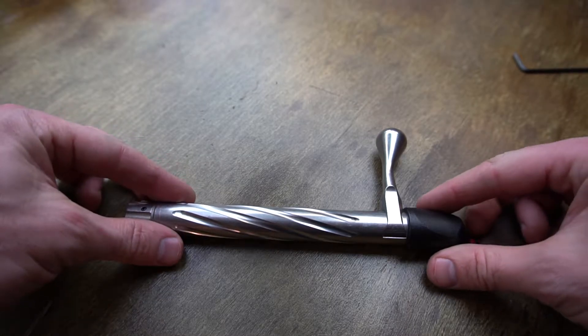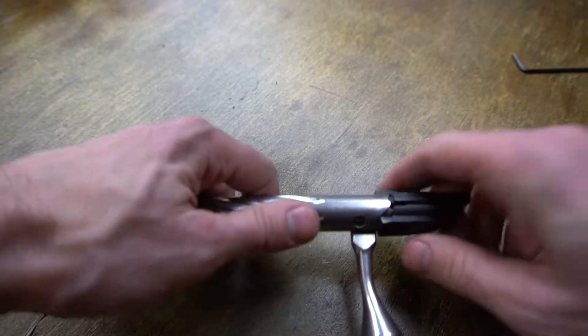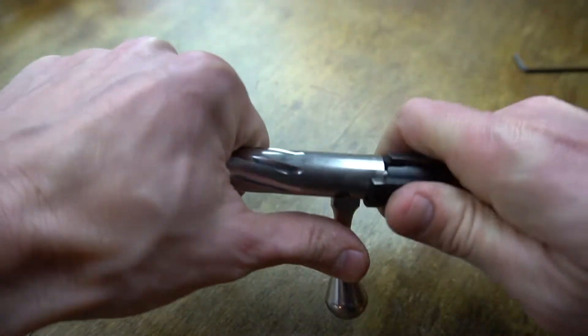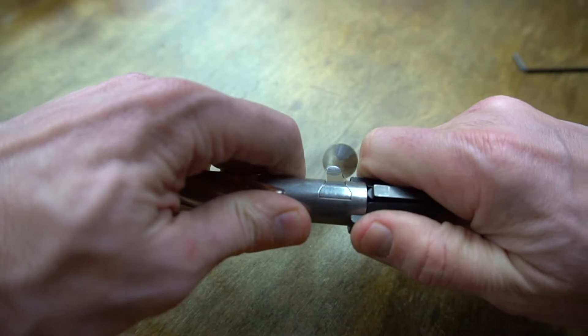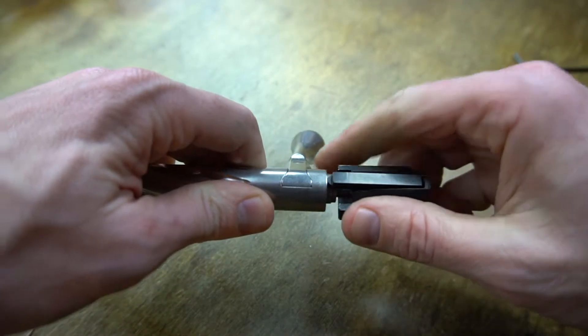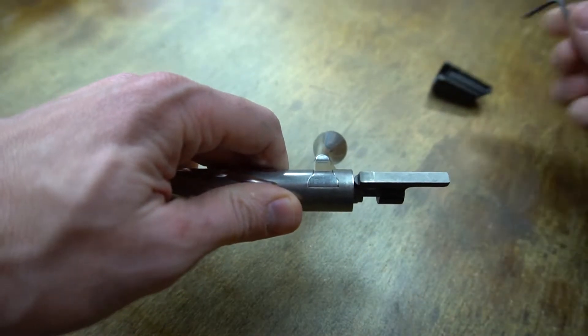So obviously we've got the bolt out of the rifle. We're going to go ahead and grab the shroud, rotate it clockwise. Once you get past the detent that's holding the shroud in place, the spring will push it off. We'll go ahead and take that off.